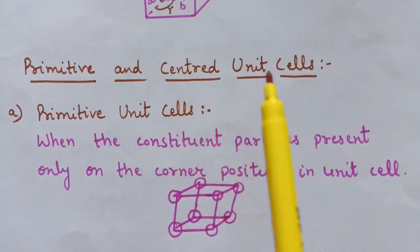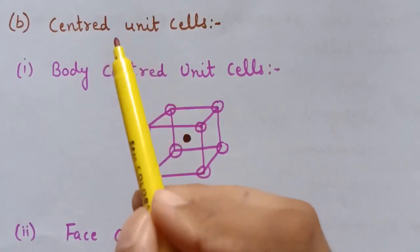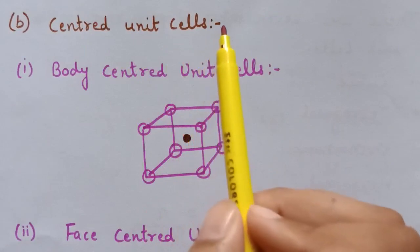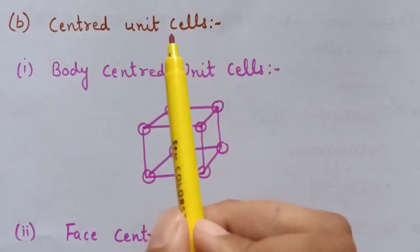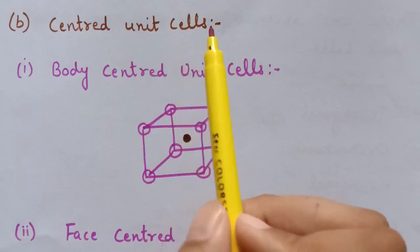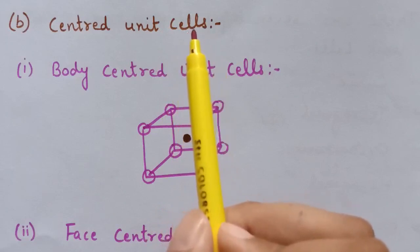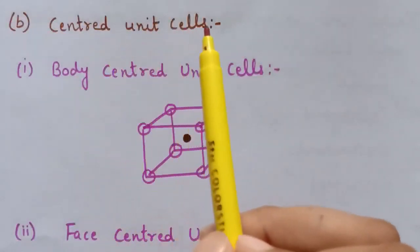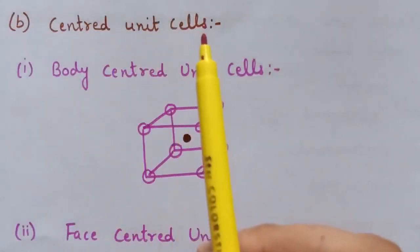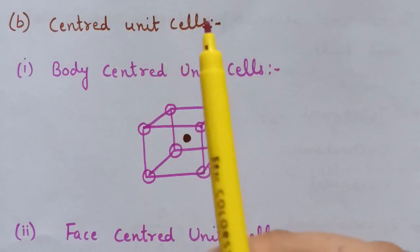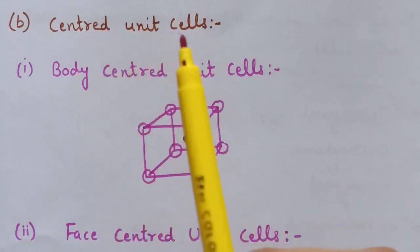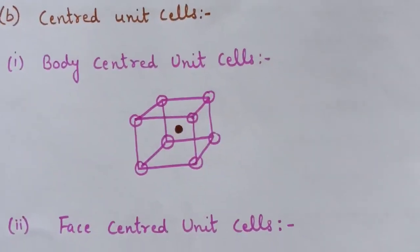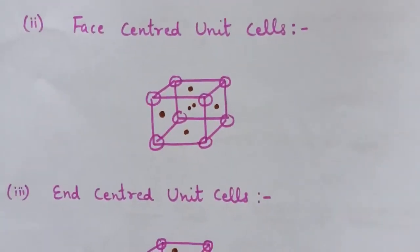The second type is centered unit cells. When a unit cell contains one or more constituent particles at positions other than corners, in addition to those at corners, it is called a centered unit cell. In centered unit cells, particles are not only present at corners but also at some other positions. There are three types: body centered, face centered, and end centered unit cells.